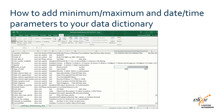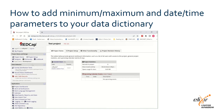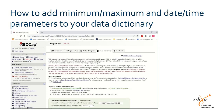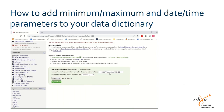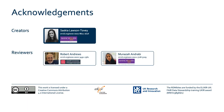First, save your data dictionary as a CSV file to your local drive, and then upload it into REDCap through the Data Dictionary tab. Set your CSV file parameters and then click 'Choose File'. Navigate to and select your saved data dictionary, click 'Open', and then click 'Upload File'. Please see the links to additional resources in the description below this video.